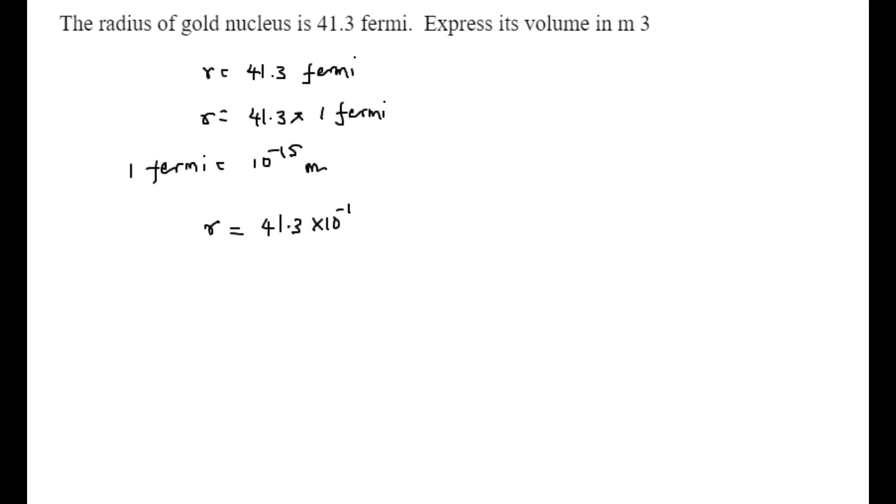Now r can be written as 41.3 into 10 power minus 15 meter. I am going to imagine the nucleus as a sphere and apply the formula 4 by 3 pi r cube for calculating the volume of gold nucleus.